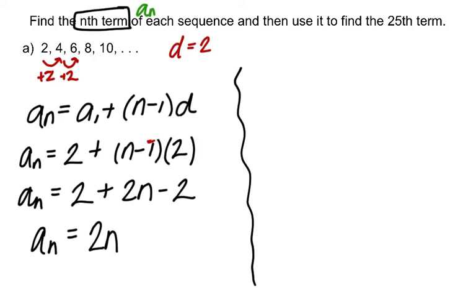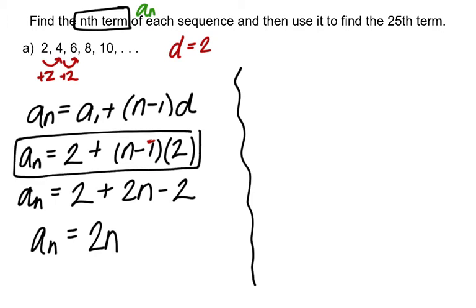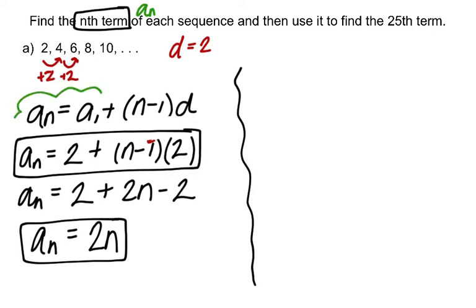The formula simplifies to a sub n is equal to 2n. You could leave your answer in either form — the unsimplified form or a sub n equals 2n. That's how you find the nth term using the arithmetic sequence formula.